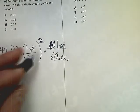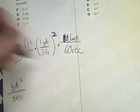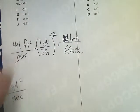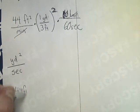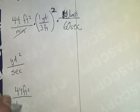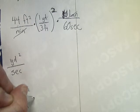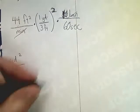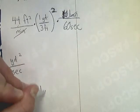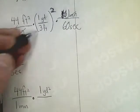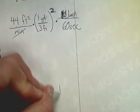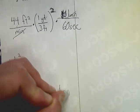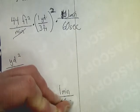I'm going to rewrite this multiplication series below. 44 feet squared per minute times one yard squared over nine feet squared. Three times three is nine, nine feet squared.